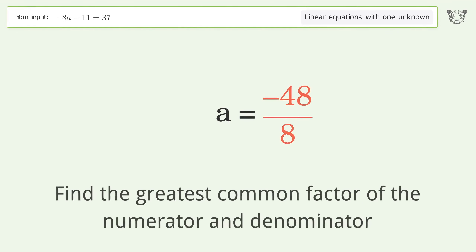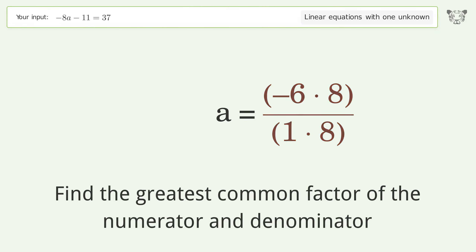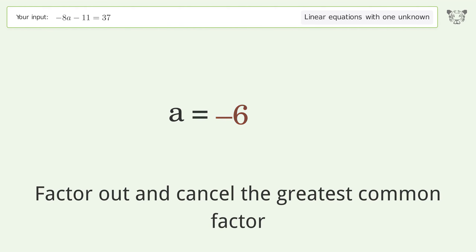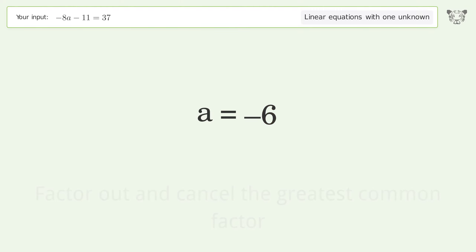Find the greatest common factor of the numerator and denominator, then factor out and cancel the greatest common factor. And so the final result is a equals negative 6.